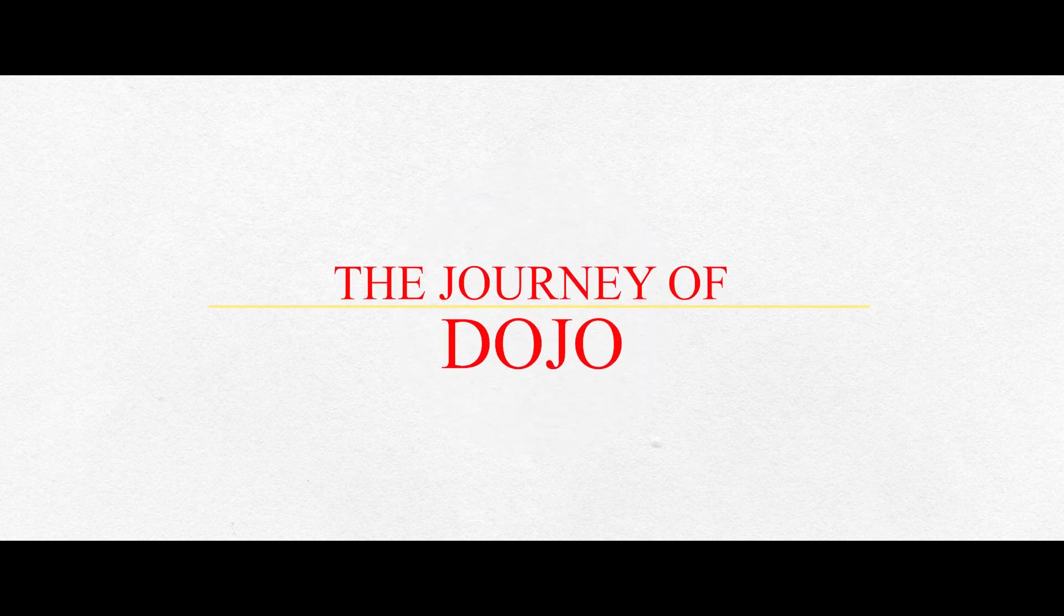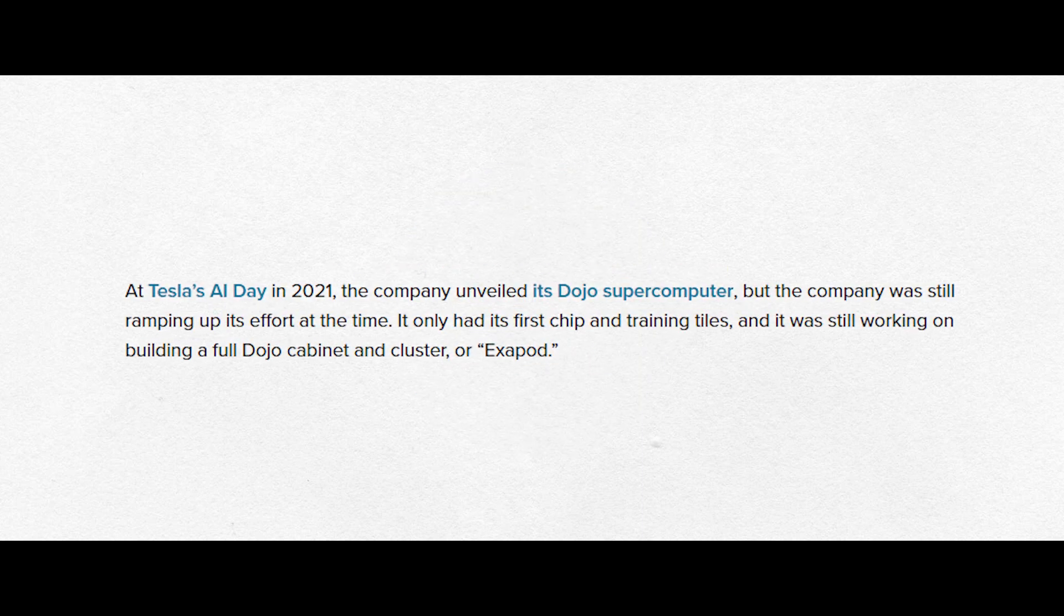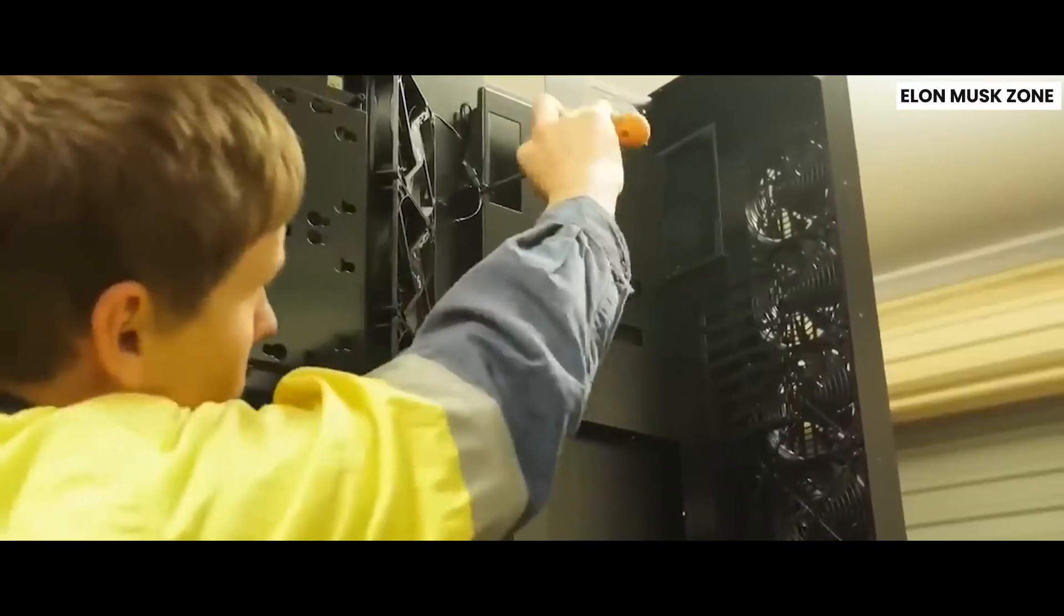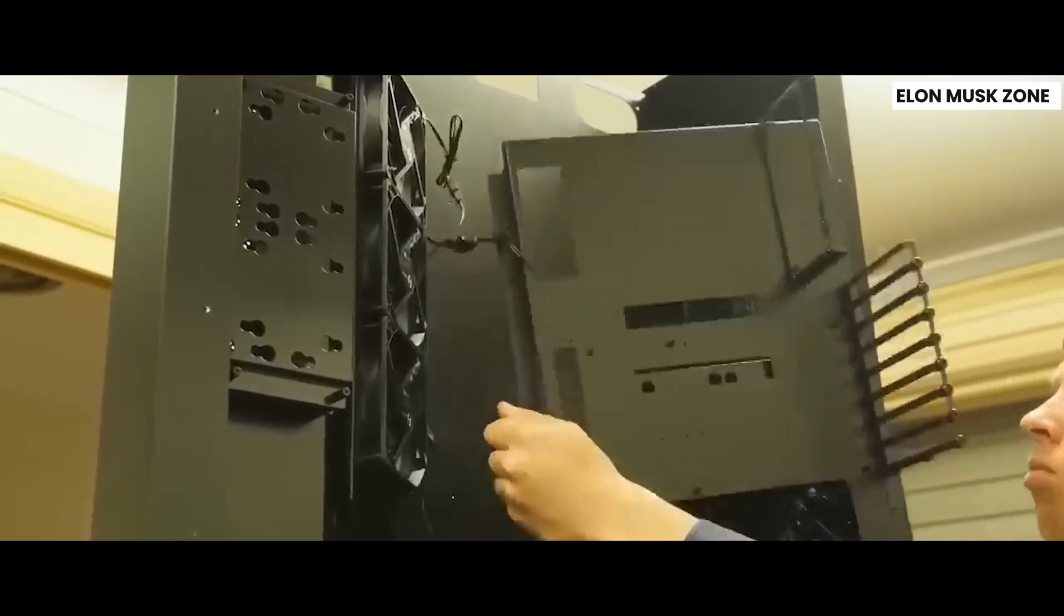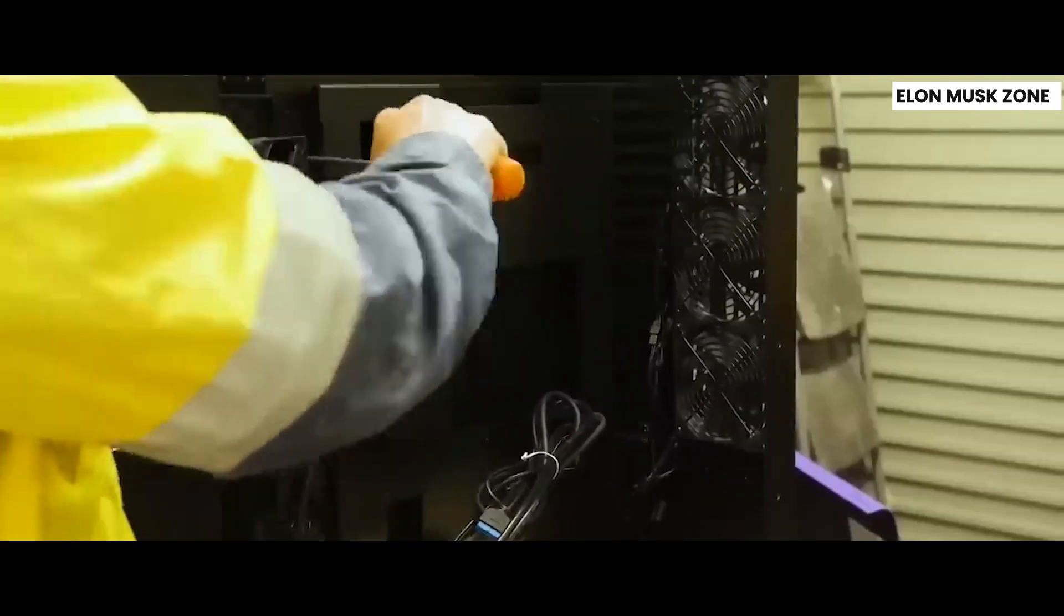Now, let's talk about the journey of Dojo. Tesla first introduced it at their AI day in 2021, but they were still in the early stages of development. They had their first chip and training tiles, and they were working hard to build a complete Dojo system.